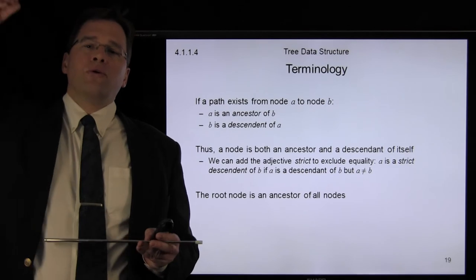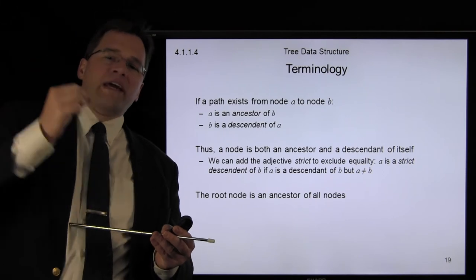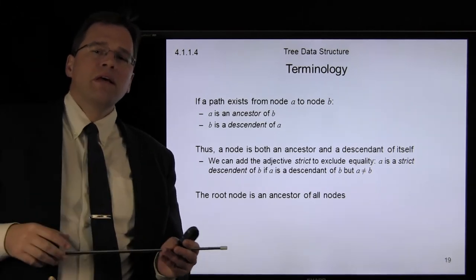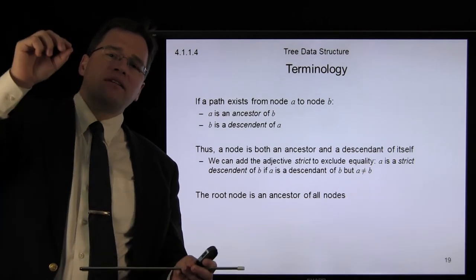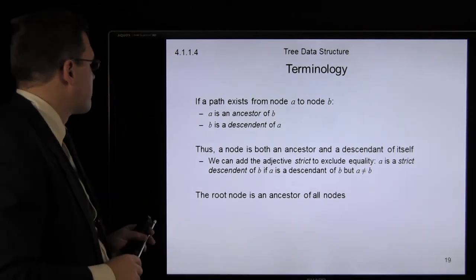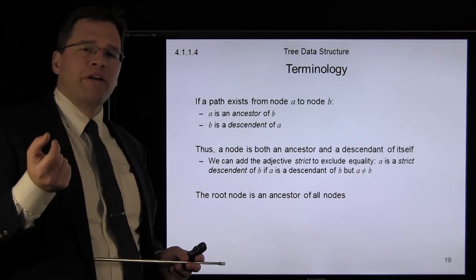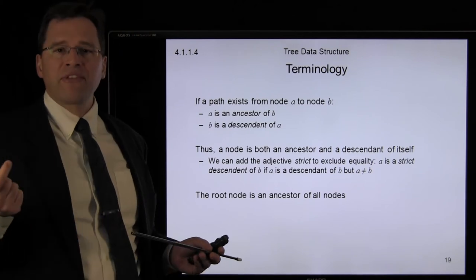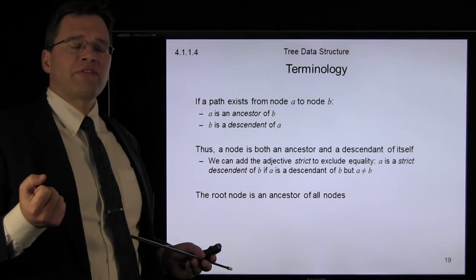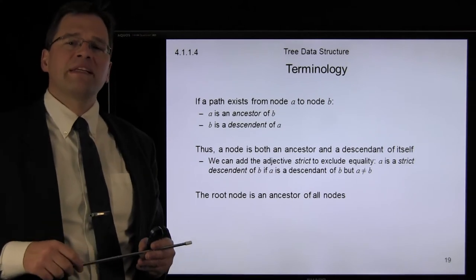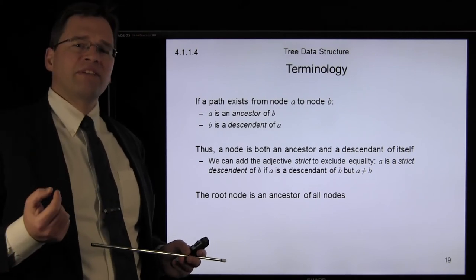Now, suppose we have a node A and a node B, and there exists a path from node A to node B. If that's true, we will say that A is an ancestor of B, and B is a descendant of node A. Now, remember, a path with just one node in it is a path of length zero, so technically there exists a path from a node to itself. It's a trivial path of length zero, but it exists. So therefore, every single node is both an ancestor and a descendant of itself.